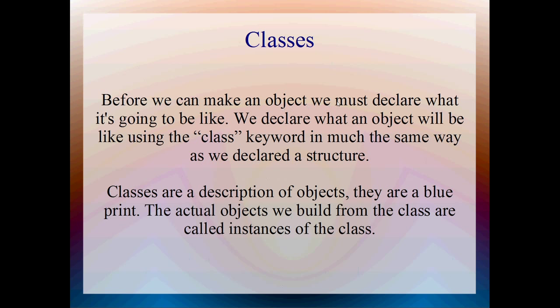Alrighty, before we can make an object, we've got to declare what it's going to be like. And we declare what it's going to be like using the class keyword, in much the same way that we declare a structure. And classes are descriptions of objects, they're not the actual objects themselves, they're like a blueprint, a recipe for making an object. And after we've made a class, we can make thousands of objects from it, from the same blueprint.